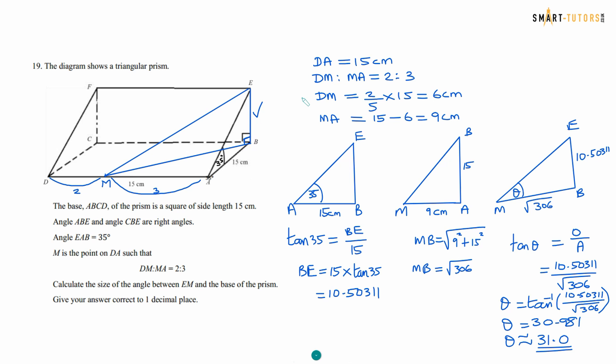Question number 19 is a 3D trigonometry. So the base A, B, C, D of the prism is a square of side length 15. So this is also 15. That is also 15. So angle A, B, E, A, B, E is a right angle. Right A, B, E is right angle. M is the point where DM is to MA equal to 2 is to 3. So this is 2 is to 3. So we need to share the 15 centimeter length into 2 is to 3. You will get 6 centimeter and 9 centimeter. So this is going to be 6 centimeter and this is going to be 9 centimeter. So I'm drawing separate triangles to understand the question.